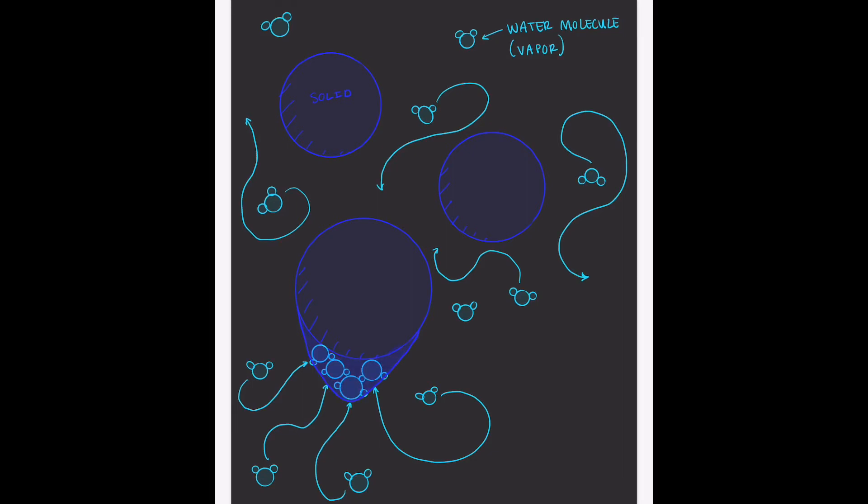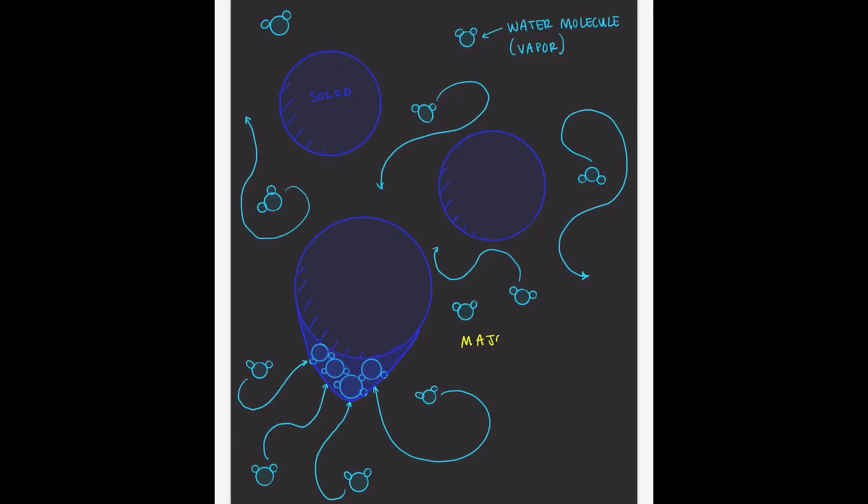So depending on the way that the water vapor is moving throughout the snowpack and coming into contact with these grains of snow, you're going to end up with grains that have shapes that are either contributing to stability or undermining stability. And while this all seems pretty complicated, there's two major factors that drive the movement of water vapor within the snowpack.